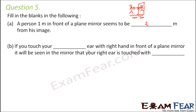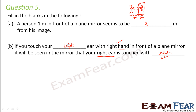If you touch your blank ear with your right hand in front of a plane mirror, it will be seen in the mirror that your right ear is touched with blank. Here comes the concept of lateral inversion — your right appears to be left in the mirror and your left appears to be right. So if you touch your left ear with your right hand, in the mirror your left ear will be seen as the right ear, and your right hand will be seen as the left hand.